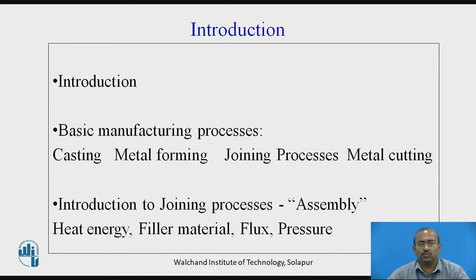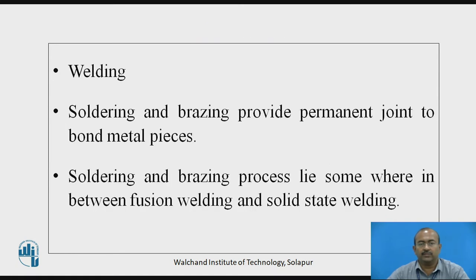When joining more than two elements together, apart from welding, there are two more permanent joining methods: brazing and soldering. In welding, the base metal as well as the filler material is converted into molten form; they mix together and after solidification the elements join permanently. Whereas in soldering and brazing, the base metal is not converted from solid state to molten state. Soldering and brazing lie somewhere between fusion welding and solid state welding.